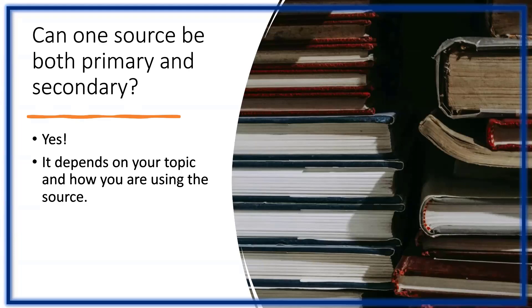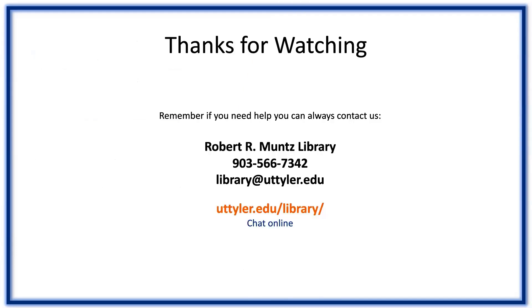If you're not sure if your source is primary, secondary, or tertiary, or you're not sure how to use it in your assignment, contact your librarian. For information on how to find primary sources, visit the Muntz Library History Research Guide linked below. Thank you for watching this tutorial on how to identify different types of sources. Don't forget to like and subscribe for more helpful tutorials and other library content. You can find us on our website at newttyler.edu/library, as well as on our Facebook page and Twitter account at Muntz Library.